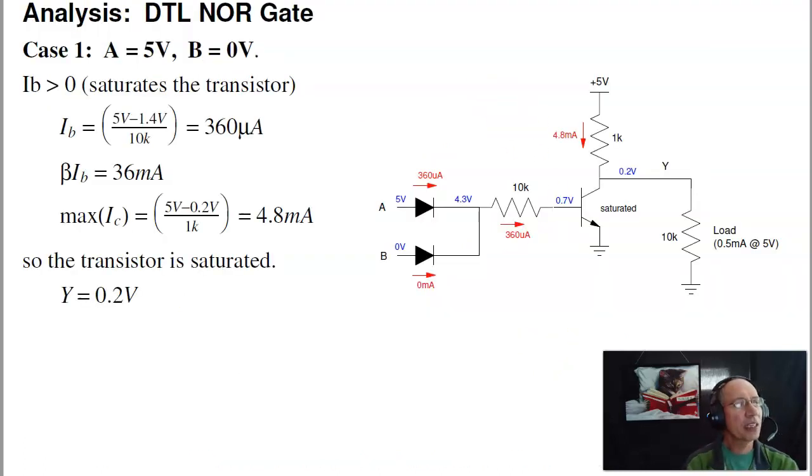So to analyze the circuit, we've got the two cases, either the transistor is on or off. To start with, suppose one of the two is on, and we're just going to make A 5 volts, B 0 volts, just to make it a little bit cleaner so you know which diode is on.